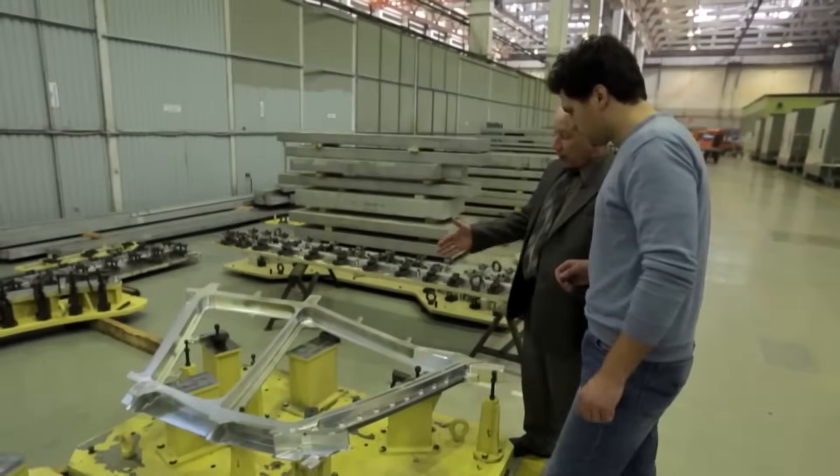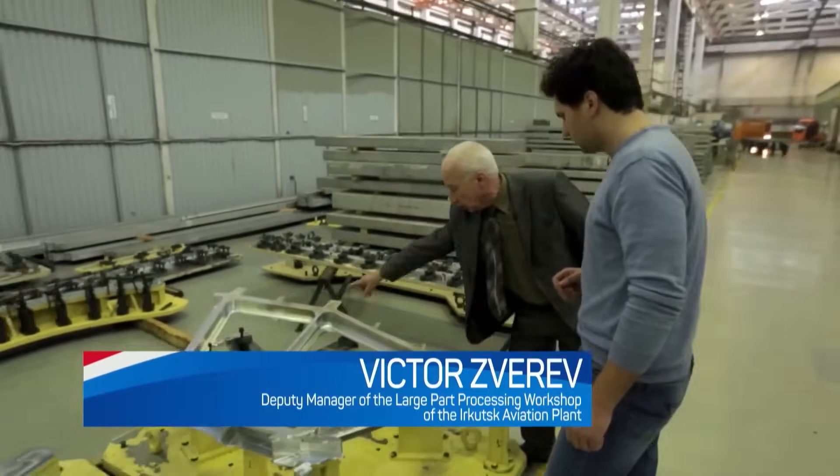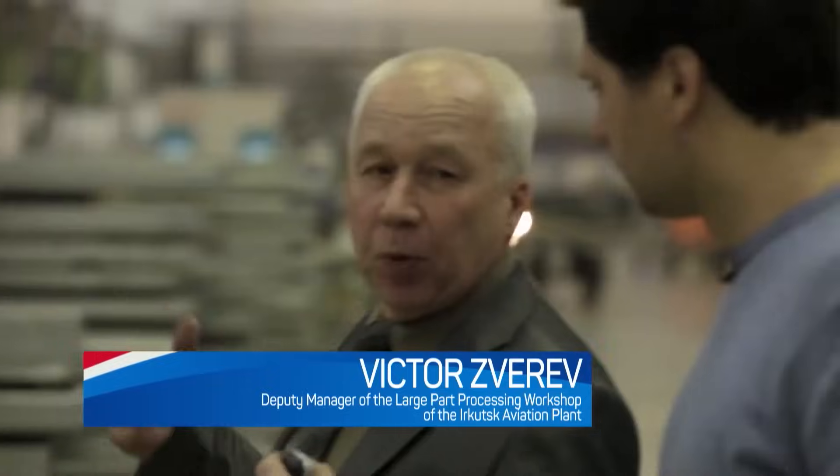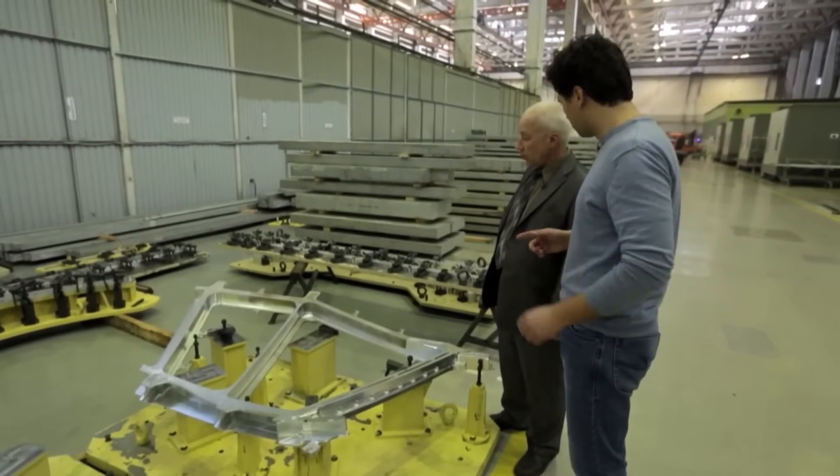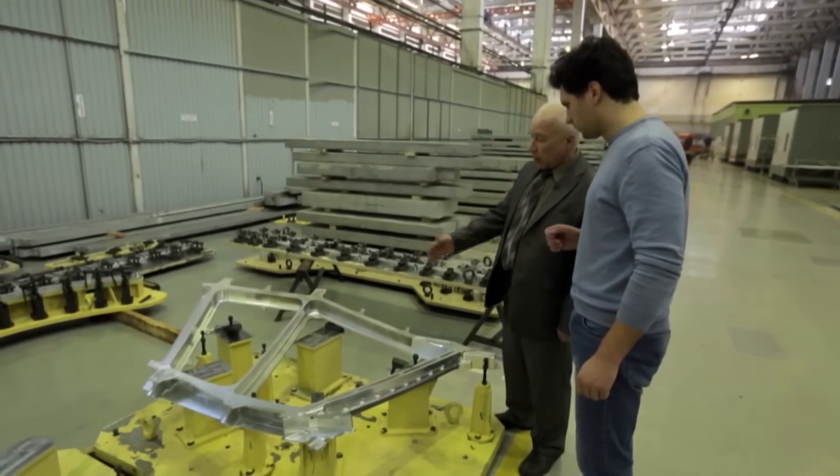This is a canopy framework. That is, it's the front part of the plane where windows are inserted where the pilots sit. The initial blank weighed around 800 kilograms and the result is about 20 to 25 kilograms.